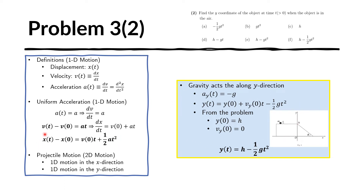This is very similar to the previous problem, so we can use the same displacement formula, replacing x with y and the acceleration with negative g. From the problem we know that at time zero the y-coordinate is h, so y of zero equals h. The y-component of velocity is also zero at time zero because the object is only moving along the x-axis and there is no y-component. Substituting, we obtain y equals h minus one-half g t squared.